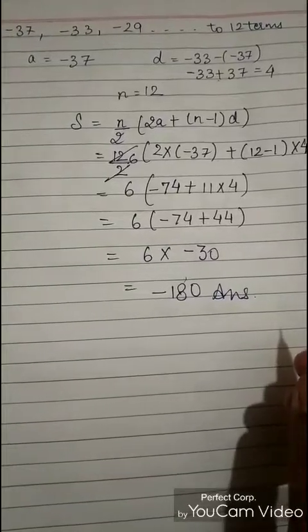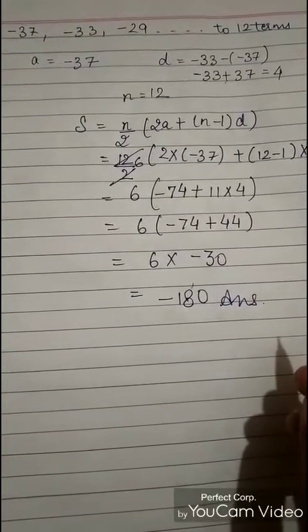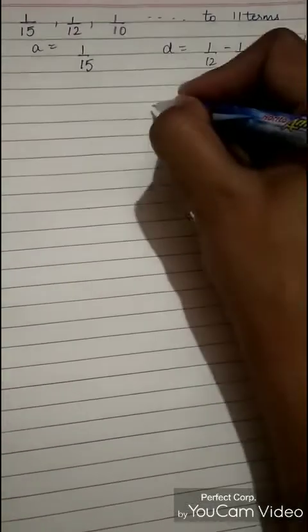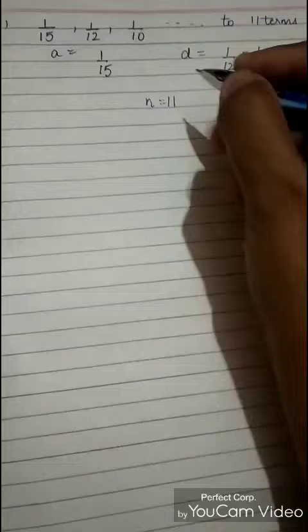Third question is your homework; you have to do it by yourself. Now for fourth question, A is 1 upon 15. D will be found as 1 upon 12 minus 1 upon 15. Taking LCM of 60: 5s are 60 minus 4s are, giving 1 upon 60. So D is 1 upon 60 and N is 11.